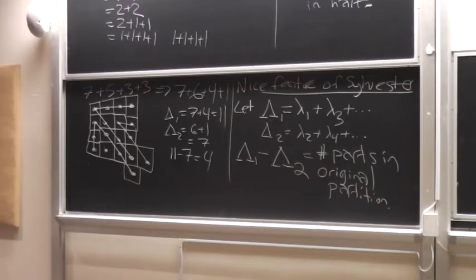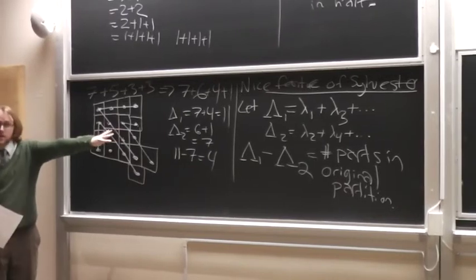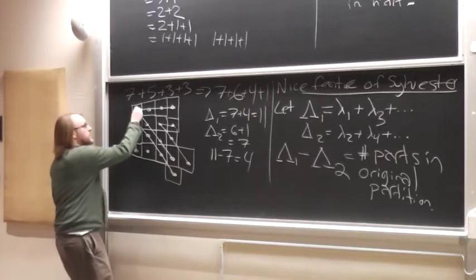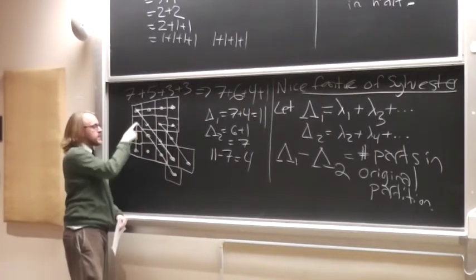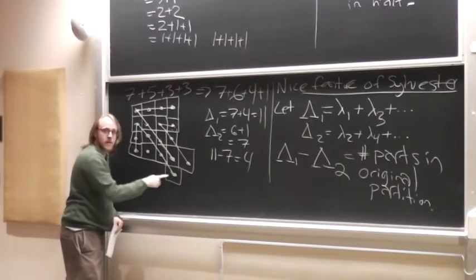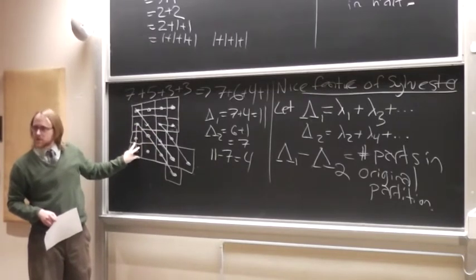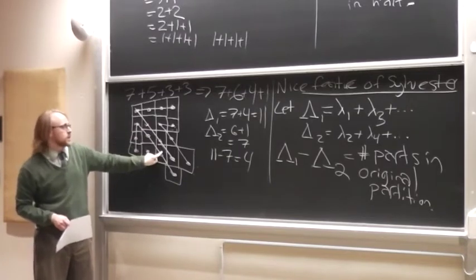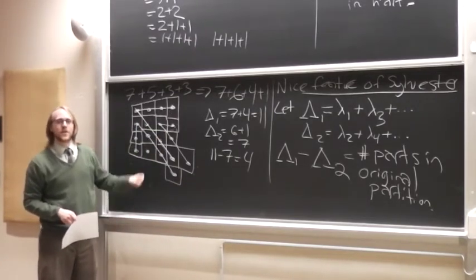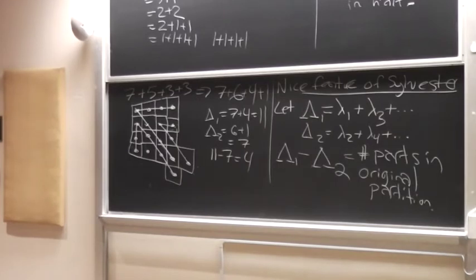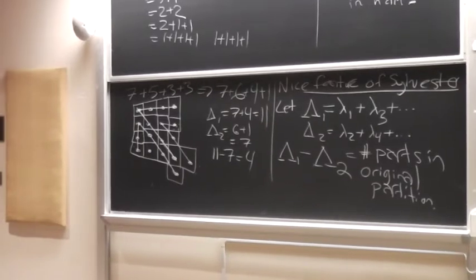We can see why this holds from the picture. Lambda-one, Lambda-two, Lambda-three, Lambda-four and so on: all the odd-indexed parts are above the main diagonal, all the even-indexed parts are below the main diagonal, but the main diagonal itself belongs to the odd-indexed parts. How many boxes are on the main diagonal? One for every part in the original partition. This is the nice feature we are going to exploit later in our proof — there will be a key step where we very much care about that.